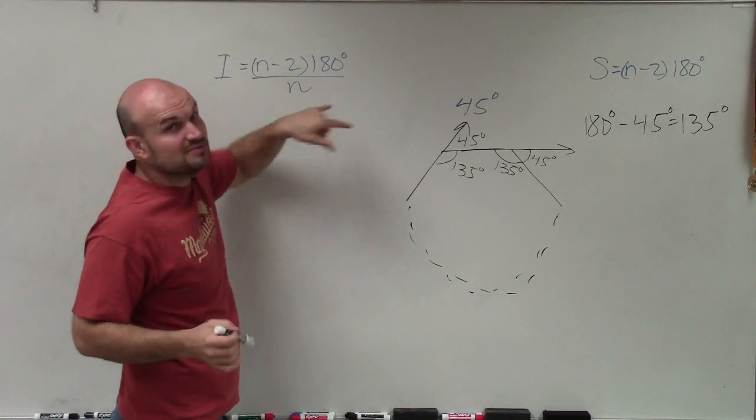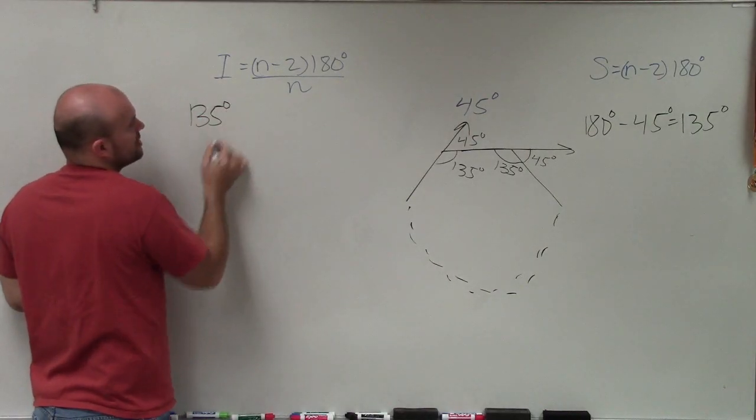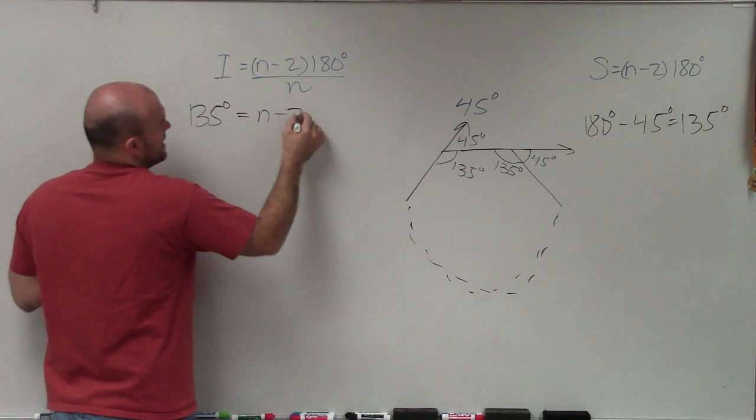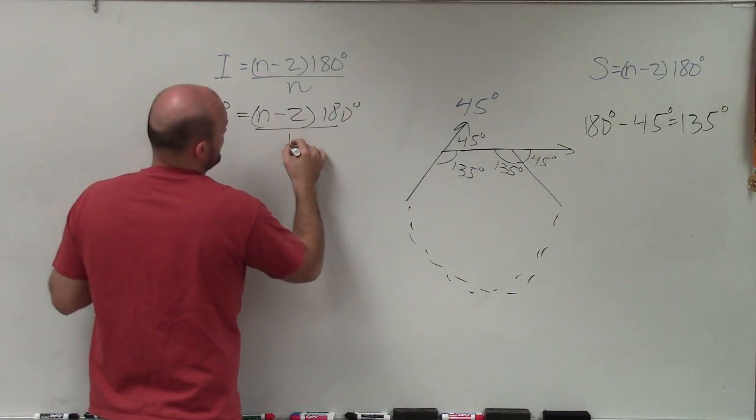So n equals the number of sides, which we need to solve for. The only thing we know is the measure of the interior angle, which is 135 degrees, equals n minus 2 times 180 degrees divided by n.